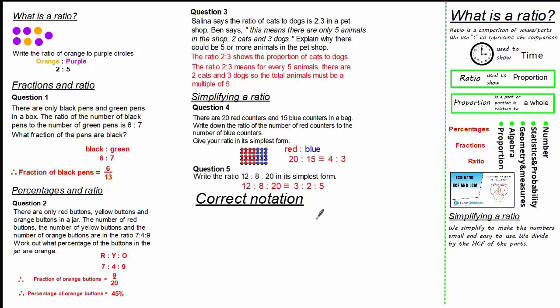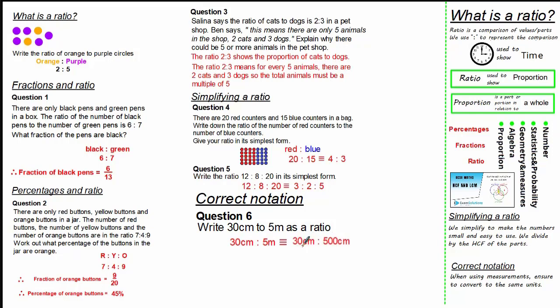Now let's make a little room for the last element of today's tutorial: correct notation. When using measurements ensure to convert to the same units. Looking at this question it states that we need to write 30 cm to 5 m as a ratio. You can see we have different units of length. This would be an incorrect notation because our units are different. I am going to change both of the units to cm. Because we have both lengths in cm we don't have to write the units, so the ratio is simply 30 to 500. Now using our knowledge on the highest common factor we can divide all parts by 10, to give us a correct simplified ratio of 3 to 50.